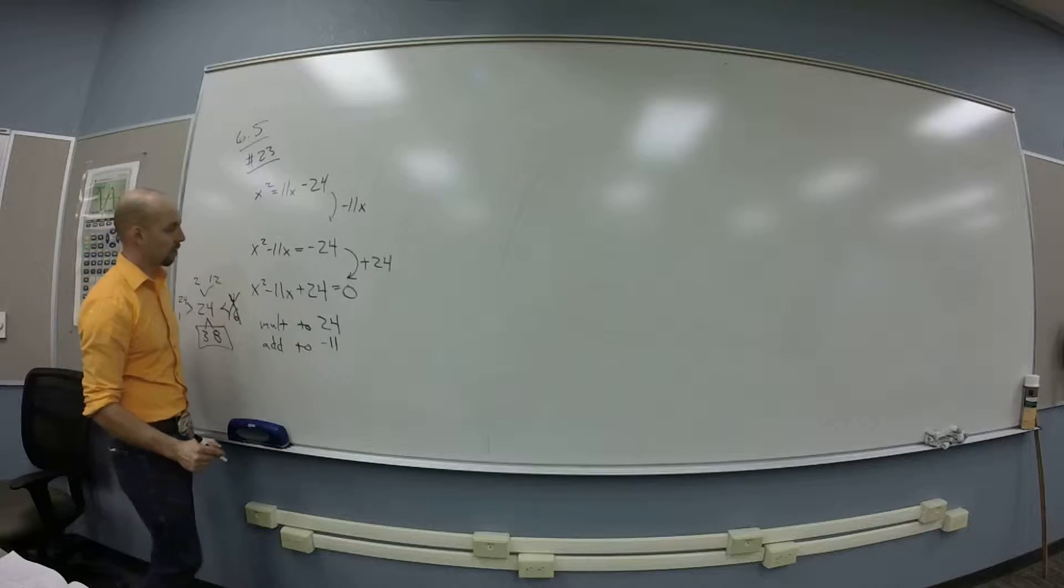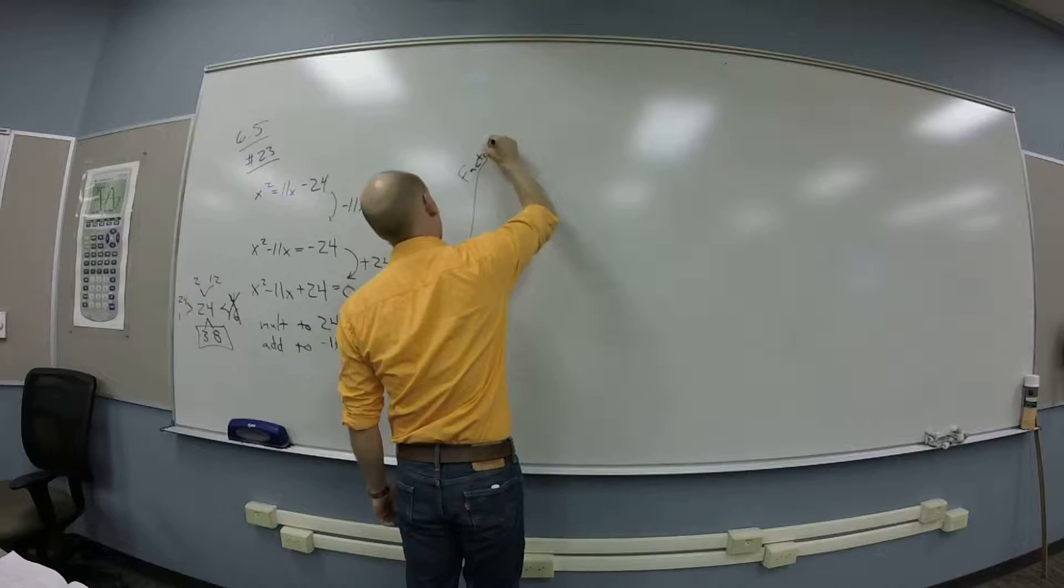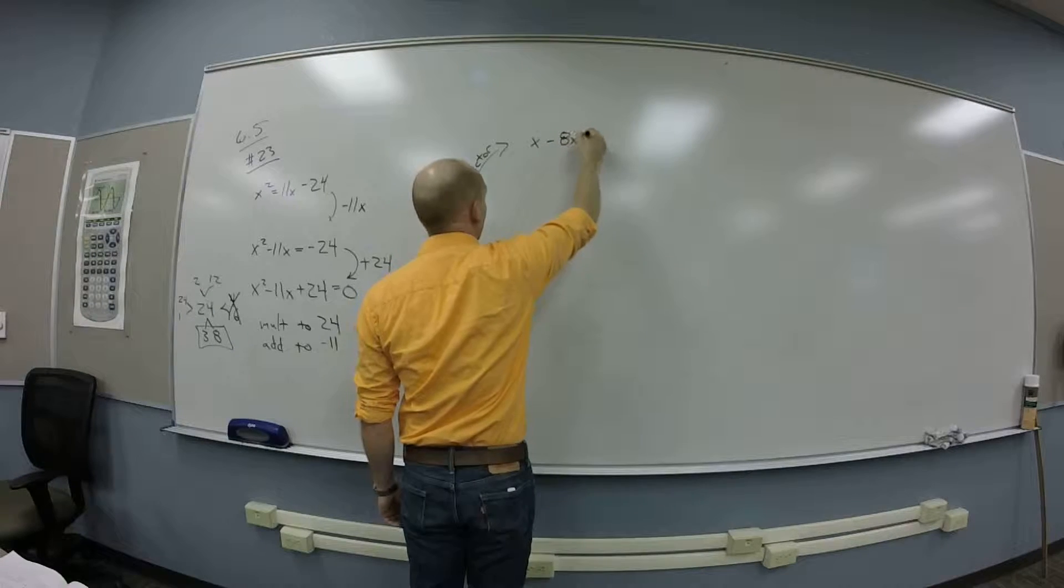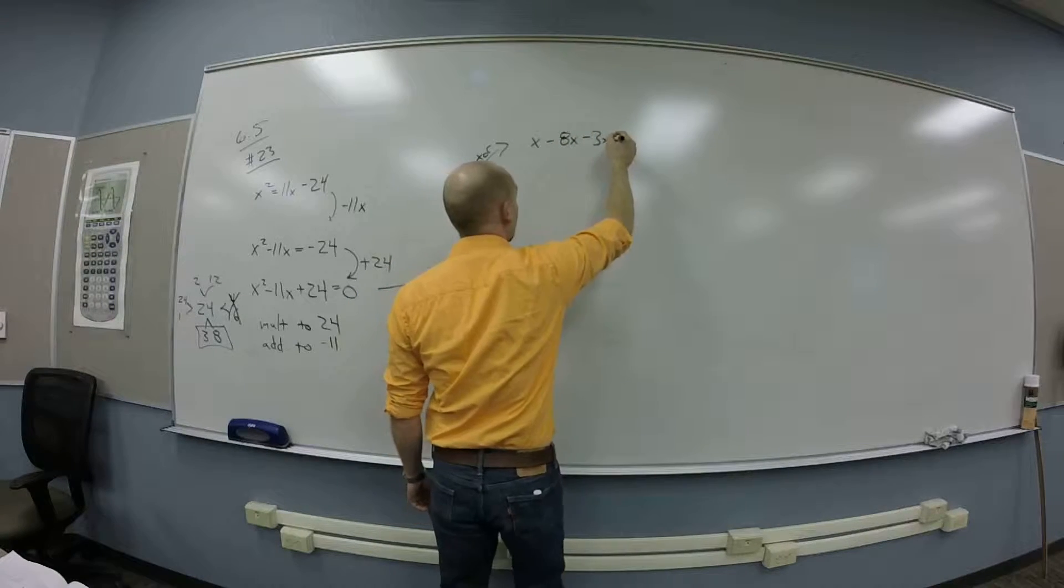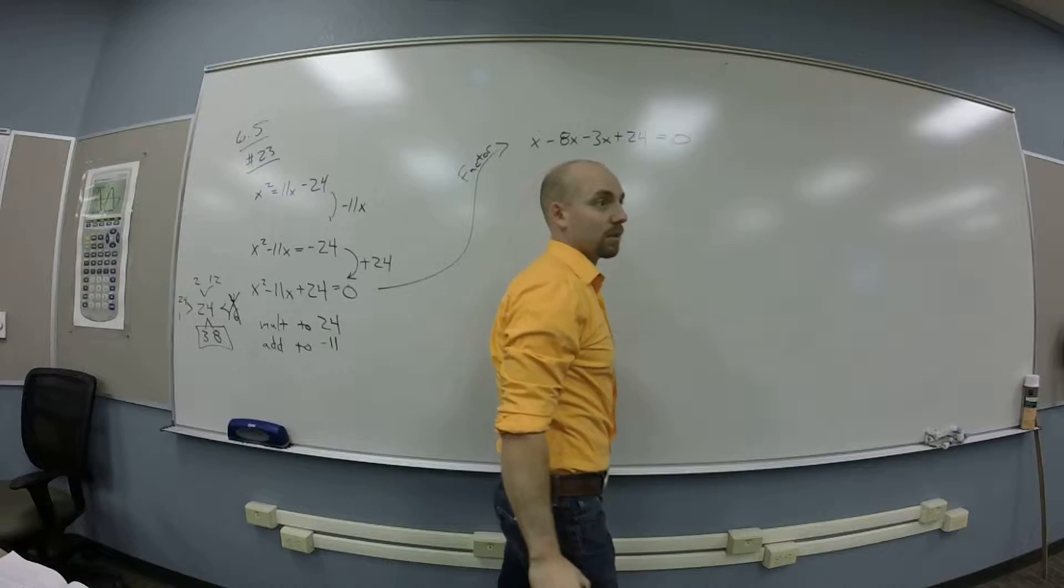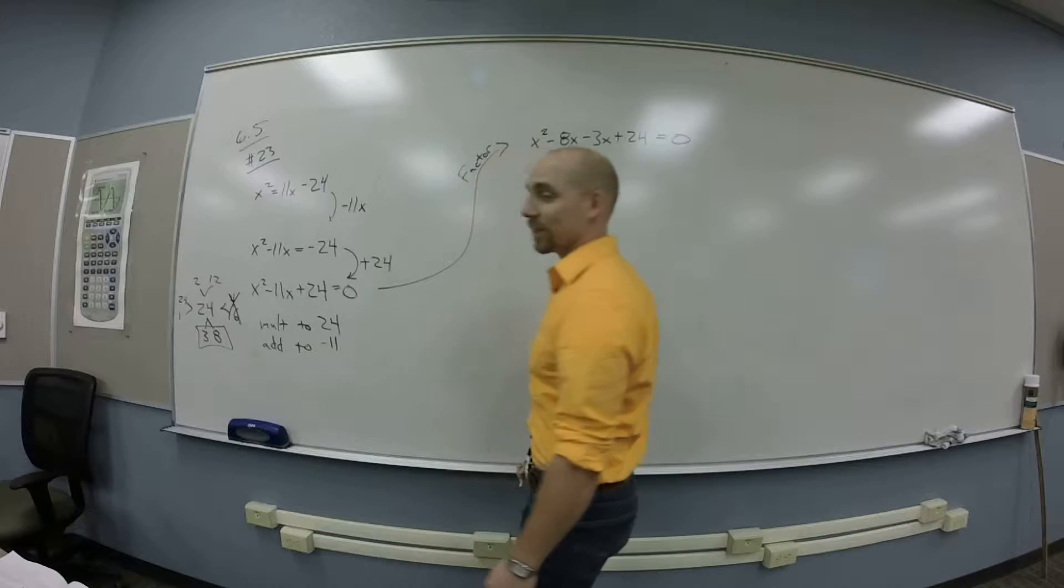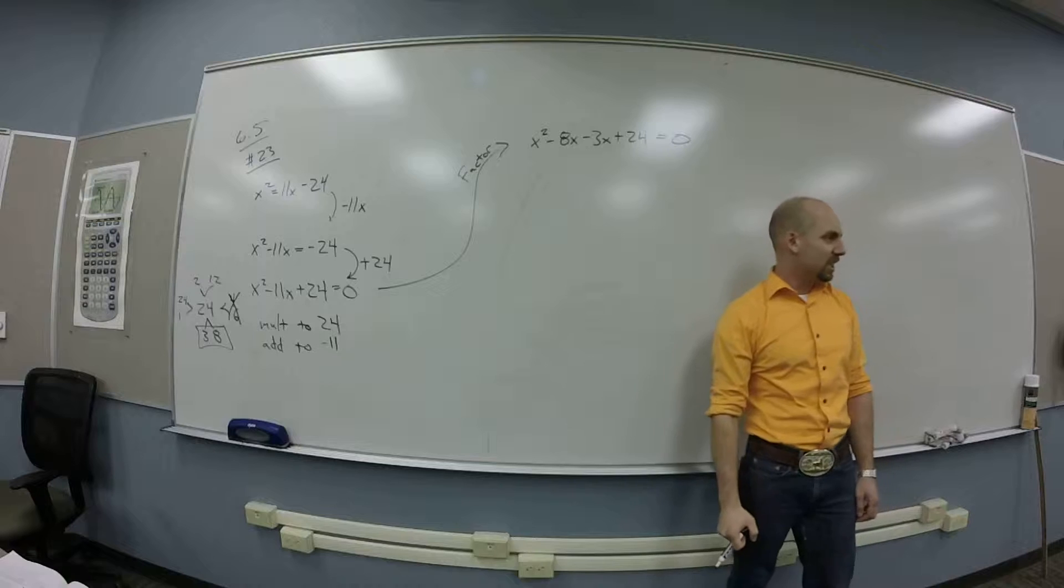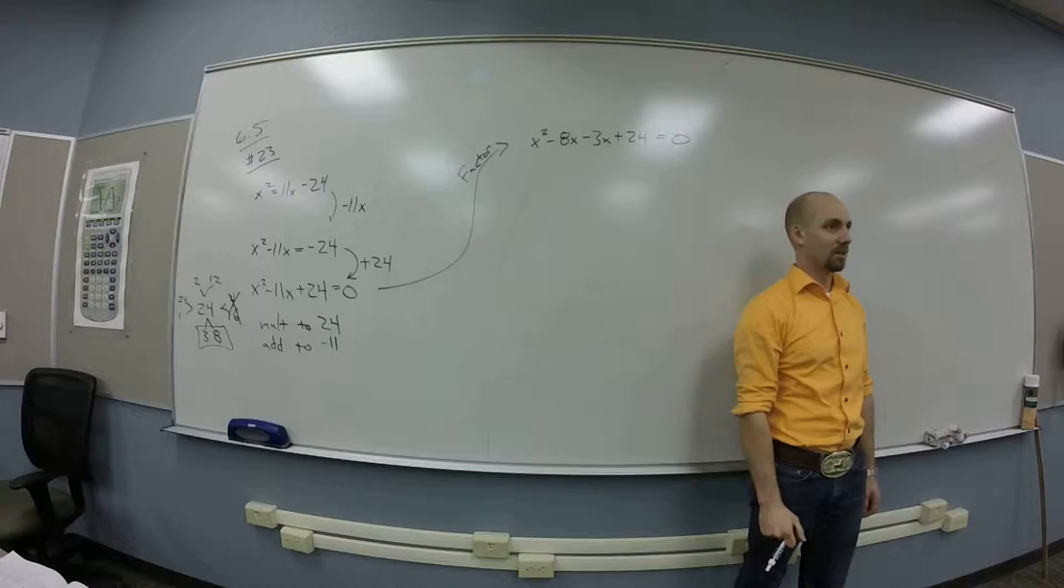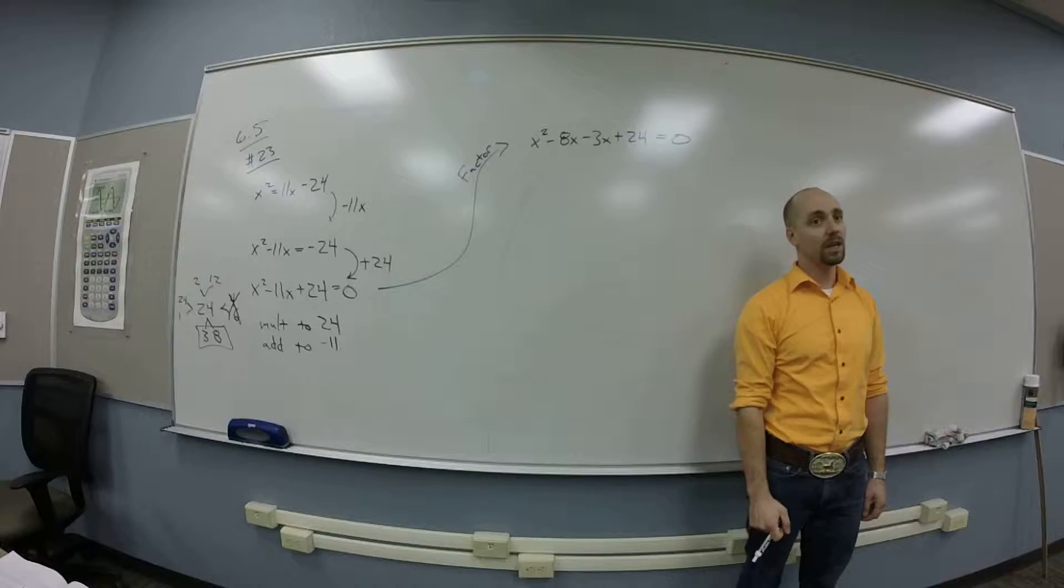Okay, so when I factor, what do I get? You get x squared minus 8x minus 3x plus 24. Okay. x should be squared. Thank you. The x should definitely be squared. So this is me using the AC method on something that's a little bit overkill, right? You guys see that? I really could have straight up factored that into x minus 8 and x minus 3.